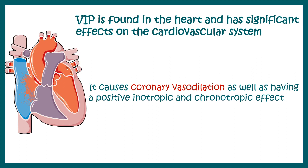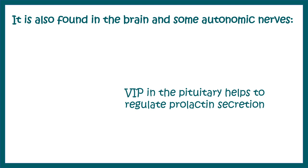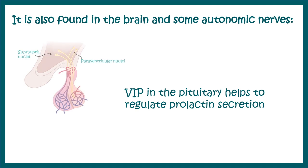VIP is also found in the heart and has significant effects on the cardiovascular system. It causes coronary vasodilation and has a positive inotropic and chronotropic effect. VIP is also found in the brain, especially in the supraoptic nucleus of the hypothalamus.